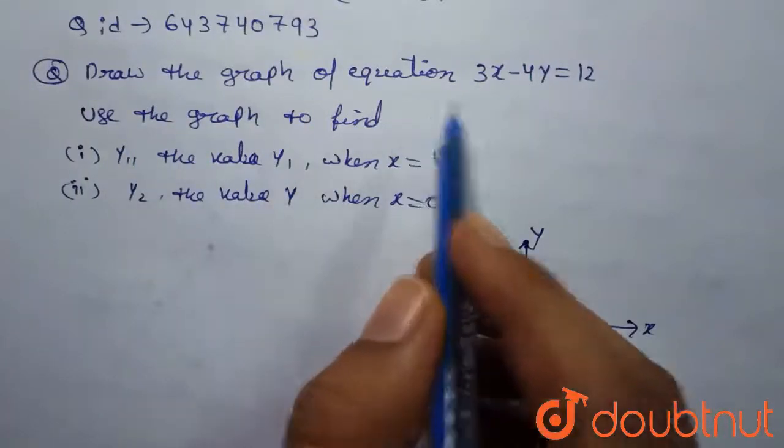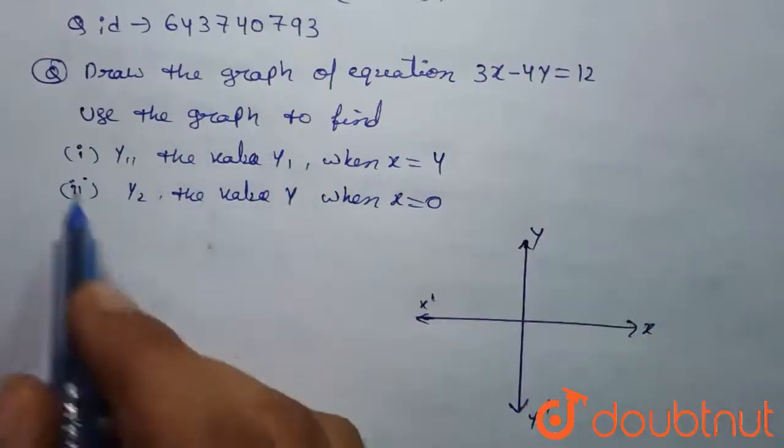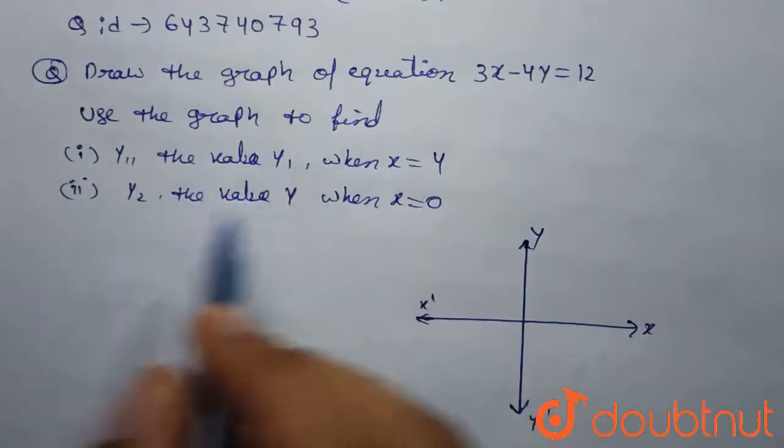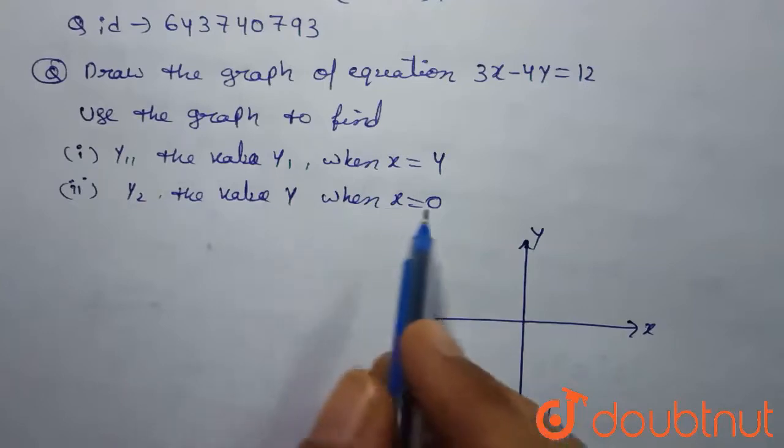Draw the graph of equation 3x minus 4y is equal to 12. Use the graph to find y1, the value of y when x is equal to 4, and y2, the value of y when x is equal to 0.